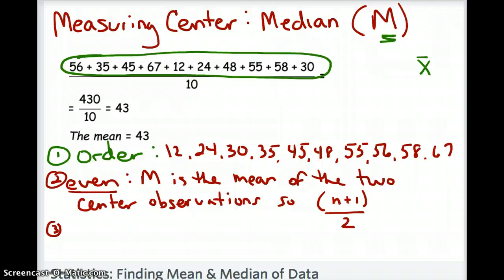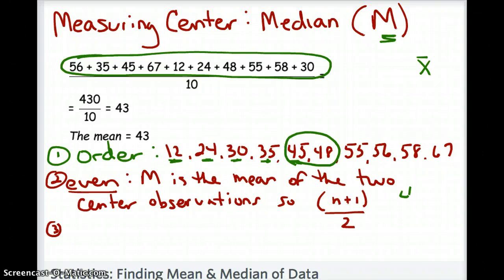Counting through the ordered data — 12, 24, 30, 35 are positions one through four — the 5th and 6th values are 45 and 48. You find the mean of those two: 45 plus 48 divided by 2 equals 46.5. So in this situation the median is 46.5. Because you have an even set of data, you must find the average of your two center points.